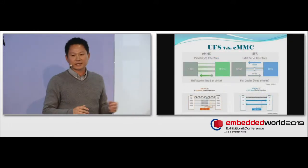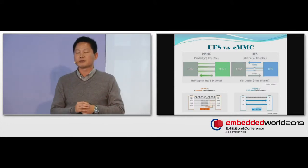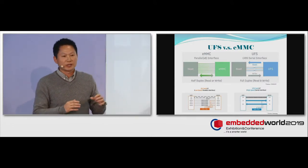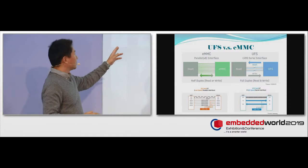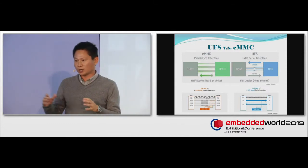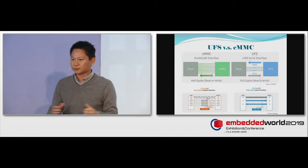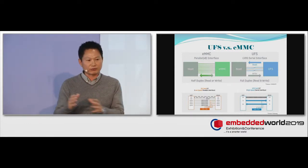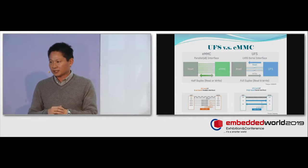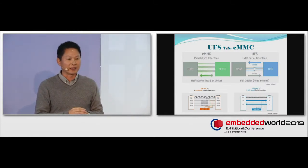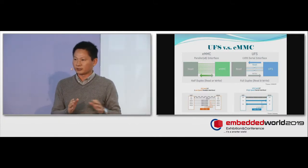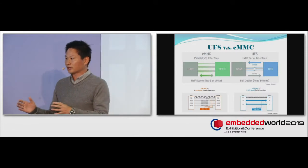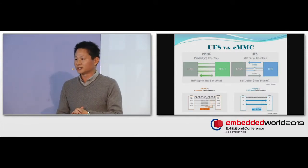So in this slide, it explains more why UFS is better than EMMC. EMMC uses half-duplex mode, while UFS uses full-duplex mode. Full-duplex means that UFS is able to do read and write at the same time. It's like talking on the phone. You can talk and listen at the same time. And EMMC is half-duplex. So you cannot read and write at the same time. It's like using walkie-talkie. You cannot listen and talk at the same time.